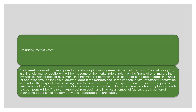Evaluating interest rate: the management of working capital takes place in the short-term decision-making. These decisions are therefore based primarily on profitability, cash flows, and their management. Many criteria go into the management of cash flow and working capital, including the evaluation of appropriate interest rate. The interest rate most commonly used in working capital management is the cost of capital. The cost of capital in a financial market equilibrium will be the same as the market rate of return on the financial asset mixture the firm uses to finance a capital investment. In other words, a company's cost of capital is the cost of obtaining funds for operation through the sale of equity or debt in the marketplace.